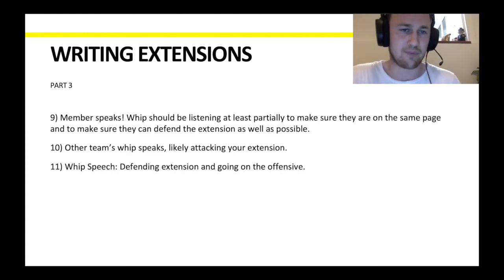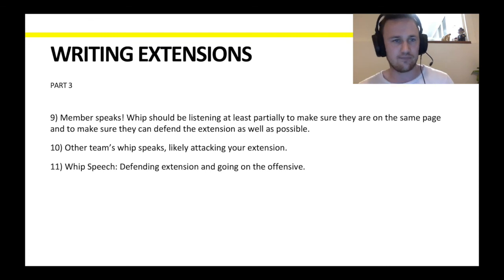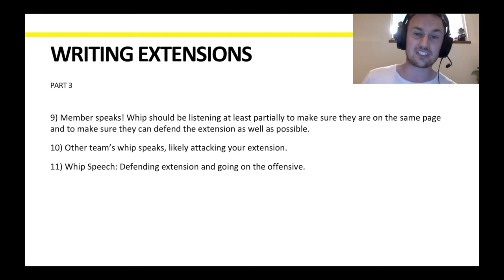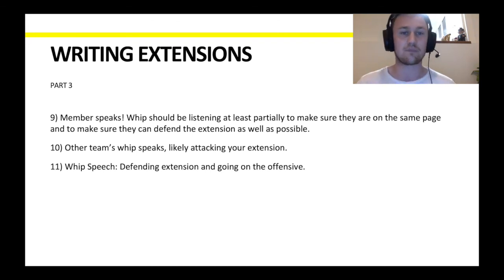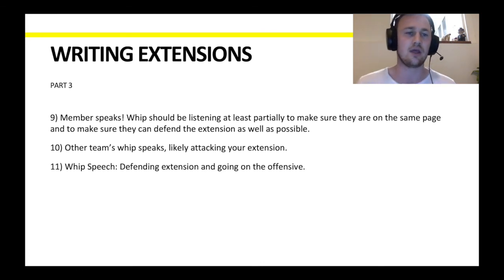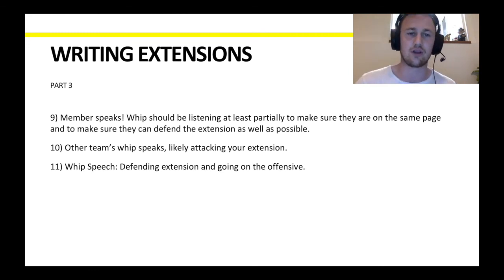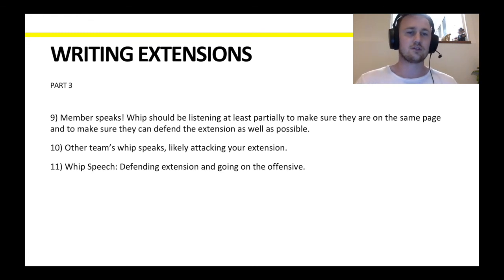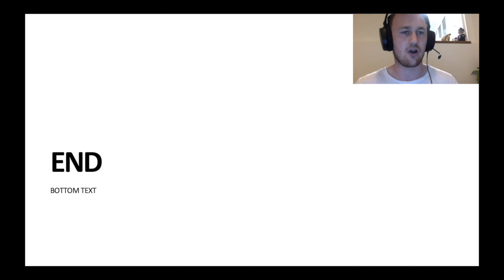Finally, the member will speak and the whip should be listening at least partially to make sure they're on the same page and can defend the extension as well as possible. Sometimes your member won't explain things quite as well as they wish they had, and that's fine — as long as the whip is listening and can note that and compensate in their speech. Then the other team's whip will speak, likely attacking your extension quite a lot. And then we close with your whip speech — defending your extension and then going on the offensive. So that is our lesson today. I hope you guys enjoyed it. Thanks for listening.